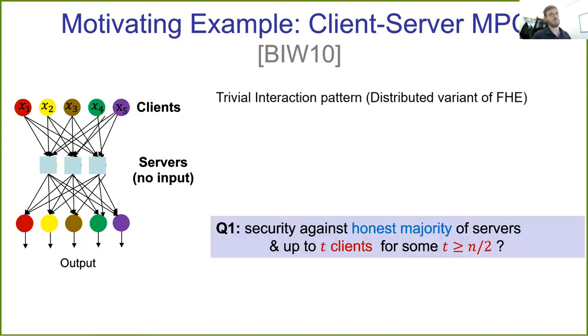And our first motivating question was, can we achieve a protocol in this model that is secure with an honest majority of the servers and up to t malicious clients, where we focus on t larger than half, so beyond honest majority? And this question is open even in the simplest case of three clients and three servers.